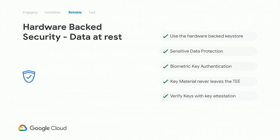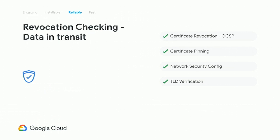With key attestation, you can also ensure that your keys haven't been compromised and have never left the device. For data in transit — if you're calling sensitive services and need to make sure someone hasn't injected a bad certificate — you can use OCSP, the Online Certificate Status Protocol, which is built into Android as of Nougat (Android 7). That allows you to add checks to ensure you can talk to your certificate authority and verify the certificate is valid. You can also do TLD verification — top-level domain validation — to make sure someone hasn't created a fake one or tried to compromise the device.